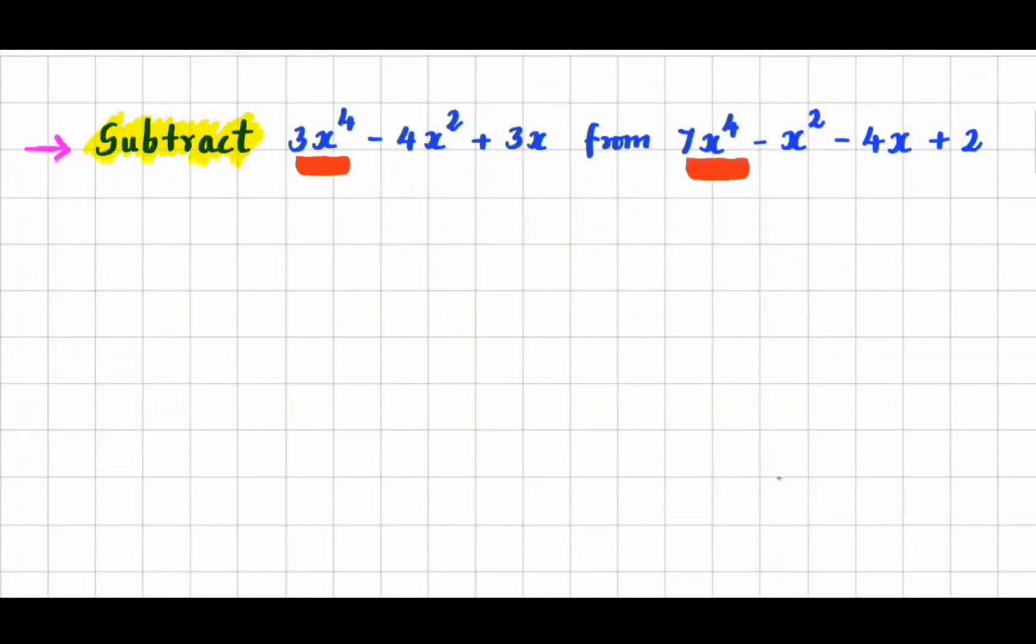Now, let's subtract these two expressions. Start with 7x to the power 4 minus x squared minus 4x plus 2 minus 3x to the power 4 minus 4x squared plus 3x. And most importantly, we should put brackets for this expression after the negative sign.